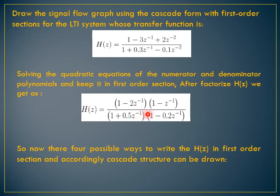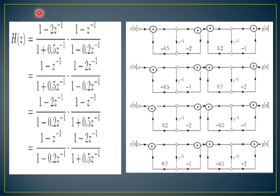Looking at this H(z), there are four possible ways to draw the cascade. This is the main expression: this is H1(z) and this is H2(z). H1(z) and H2(z) should be drawn in direct form 2 and then cascaded. In direct form 2, always on the left side you get poles and on the right side you get zeros. The value of the pole is +0.5, so you need to write -0.5, because the coefficient is -a1.